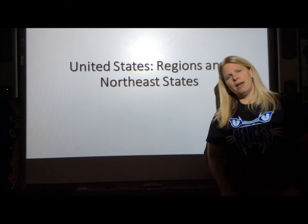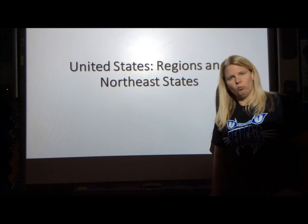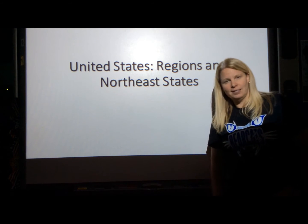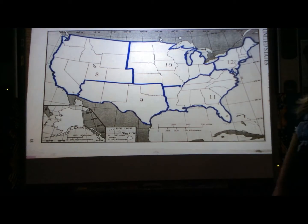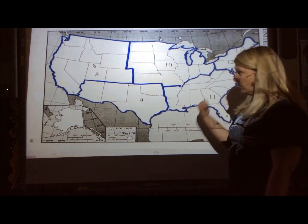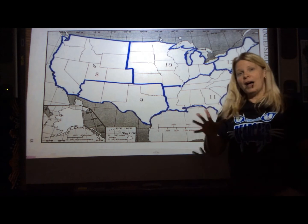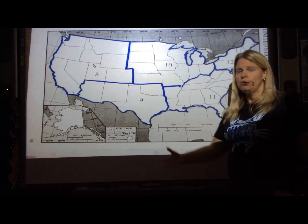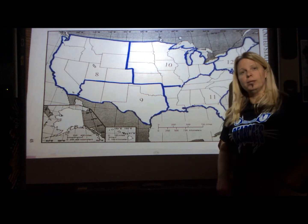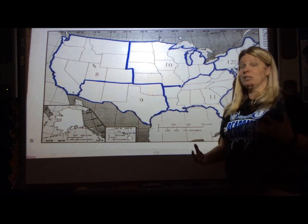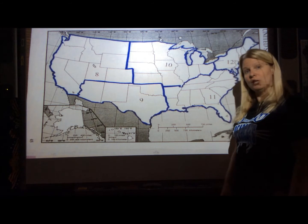So teachers, if you haven't passed out the region map, go ahead and pass that out because I want them to fill out what regions that we have in the United States. So your map should look like this right here. What we have are five political regions. Now there are two types of regions that we look at with the United States — one being a physical region, which means it would be based on like mountains and lakes and rivers. The other is based on borders, like state borders.